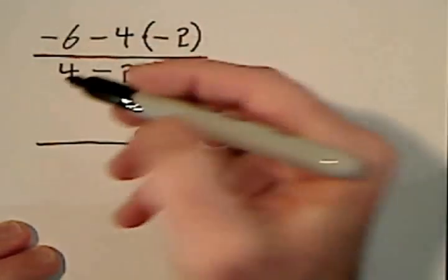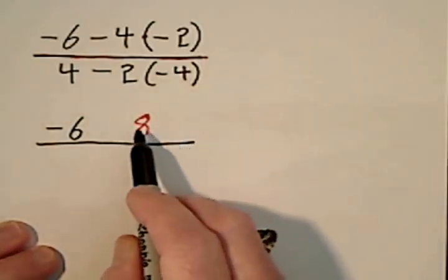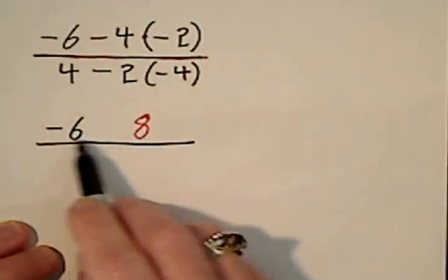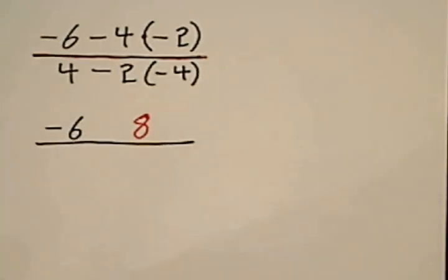I haven't used this negative 6, so the negative 6 comes down. If I don't put a positive in front of the 8, there's nothing indicating what operation is supposed to take place.